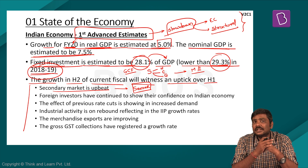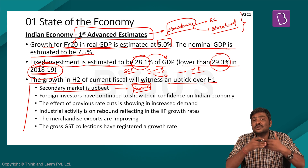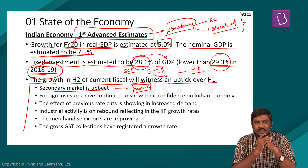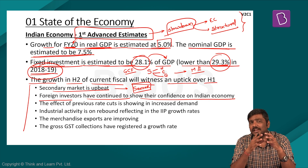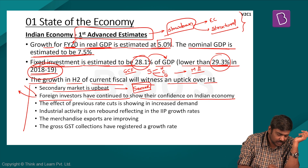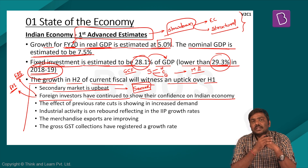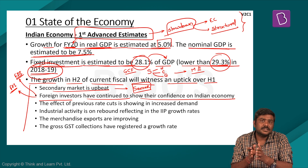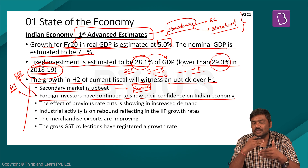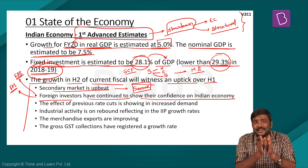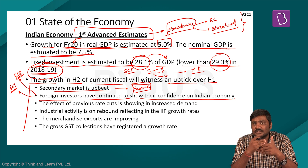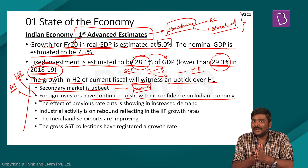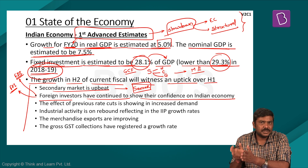Second, foreign investors have continued to show confidence in the Indian economy. FPI (Foreign Portfolio Investors) and FDI (Foreign Direct Investment) inflows have increased into the Indian market. There is a net inflow of both FPI and FDI despite the Indian economy slowing down in the second quarter of the current fiscal, which shows these investors are confident about the growth prospects of the Indian economy.